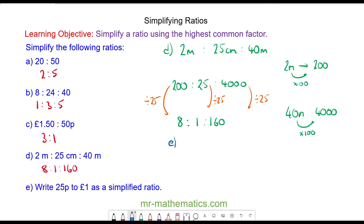For question E, we have 25 pence to £1. We'll convert the pounds into pence, so we have 25 to 100. We can divide both by 25, so we have 1 to 4.